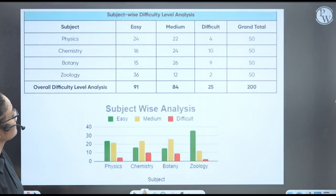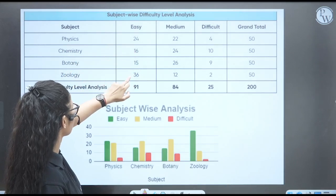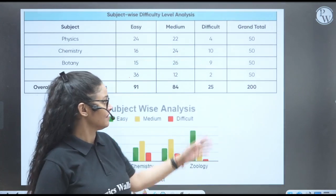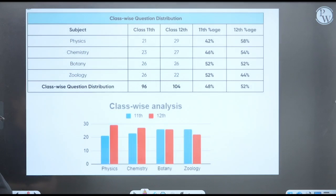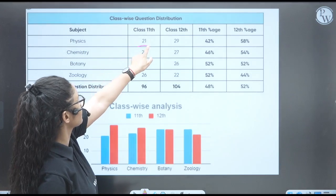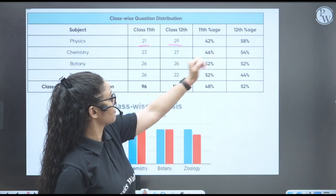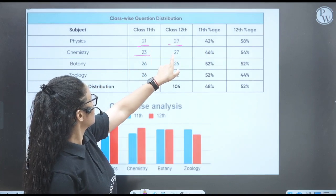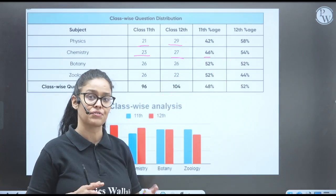Next, when we talk about the subject-wise difficulty analysis, Physics has 24 easy, 16 medium type, and you can see difficult type questions. These are the number of questions you will be finding in this paper. So when we talk about the class-wise questions, from the 11th class in Physics, we have 21 questions. From the 12th, 29, and total 58% of 12th and 11th, 42% syllabus.